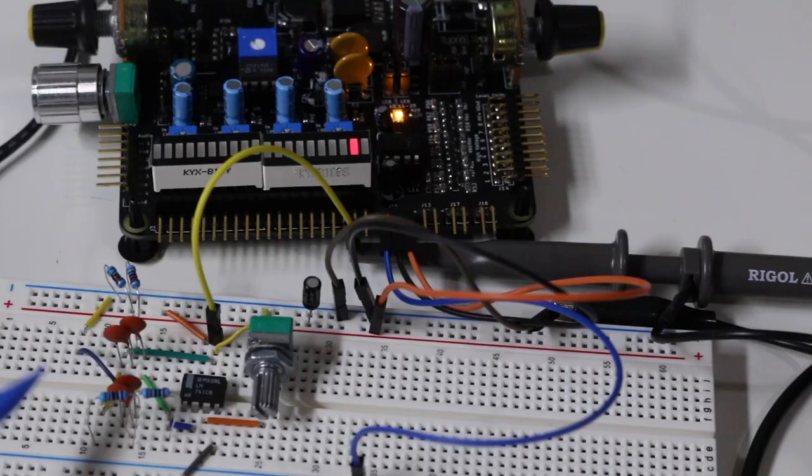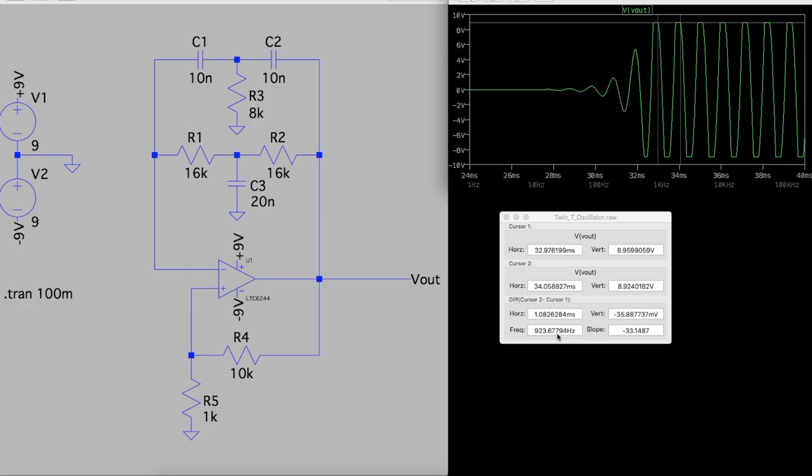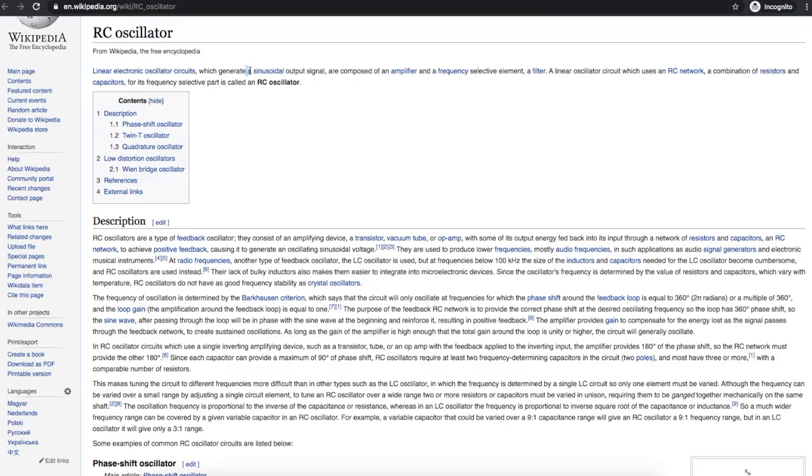Let's design, simulate, and build an RC oscillator using an op-amp and a twin-T filter network. We can generate a sine wave using an RC oscillator, which will use an amplifier. We're using an op-amp and an RC filter.